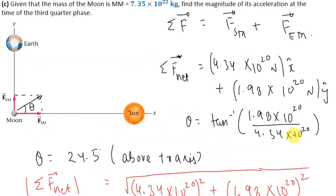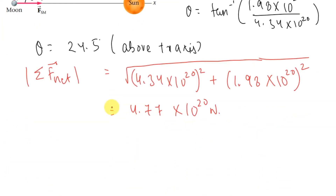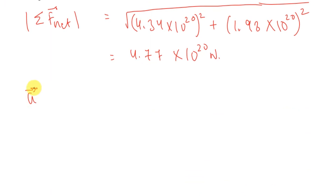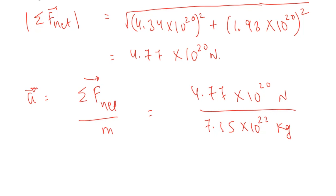Next, we find the acceleration of the Moon given its mass is 7.35 × 10²² kg. From Newton's second law, acceleration equals net force divided by mass: a = 4.77 × 10²⁰ / 7.35 × 10²² = 0.00649 meters per second squared. The direction of the acceleration is the same as the direction of the net force.